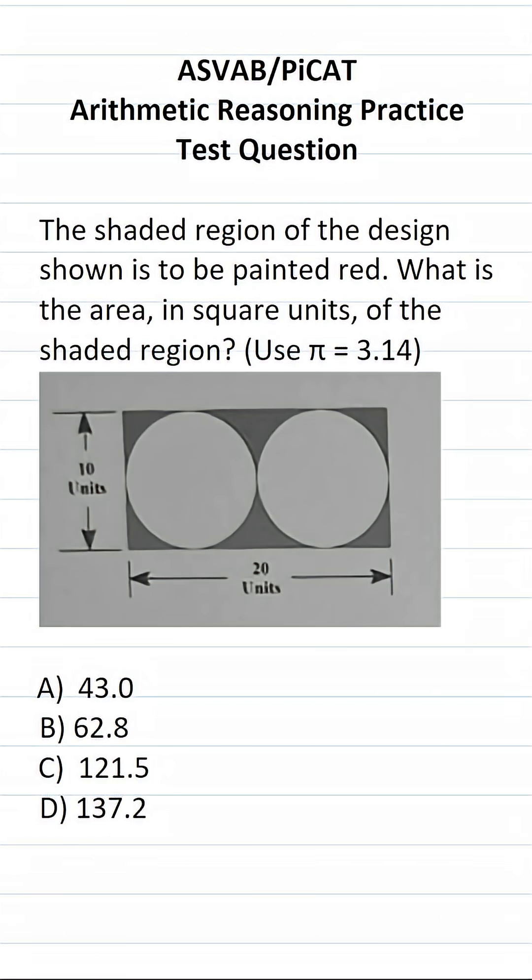This arithmetic reasoning practice test question for the ASVAB and PICAT says, the shaded region of the design shown is to be painted red. What is the area in square units of the shaded region? Use pi equals 3.14.